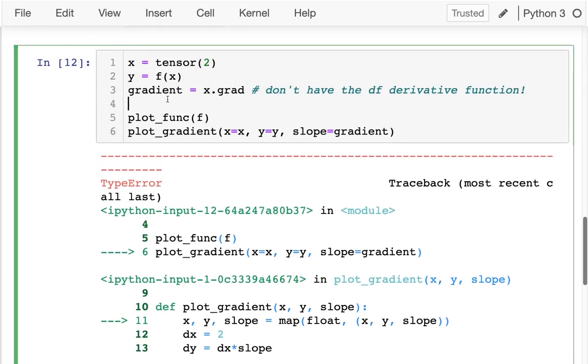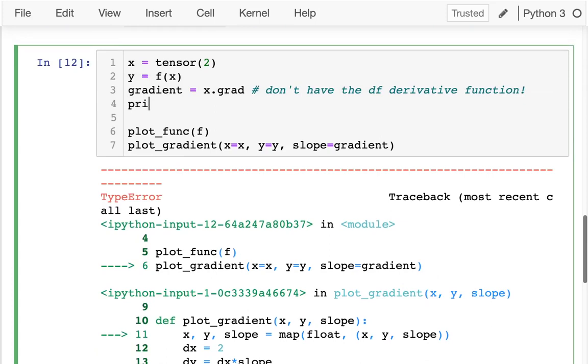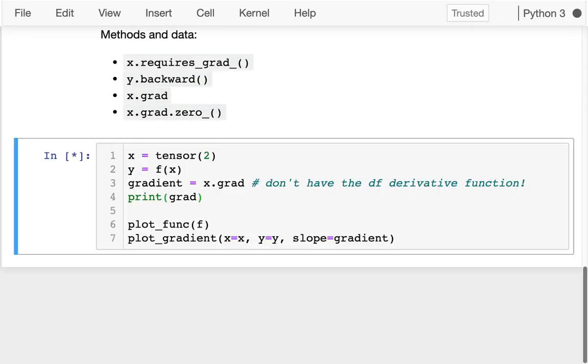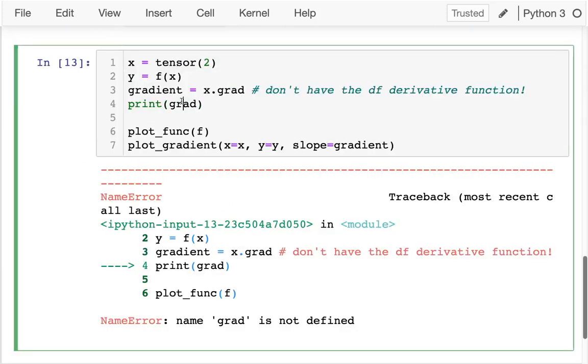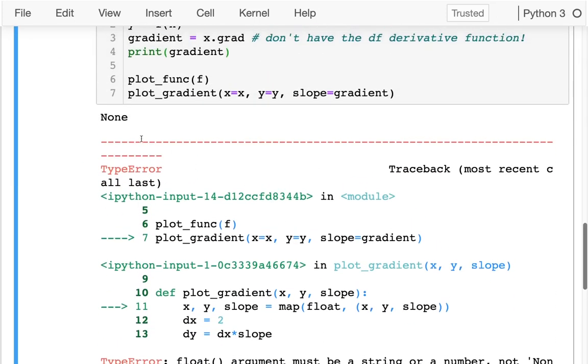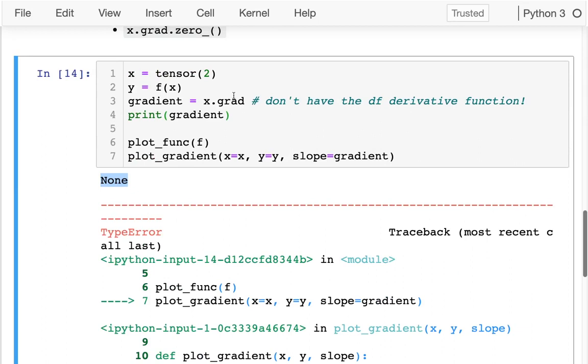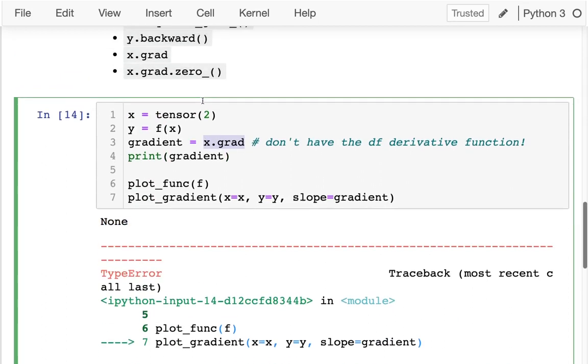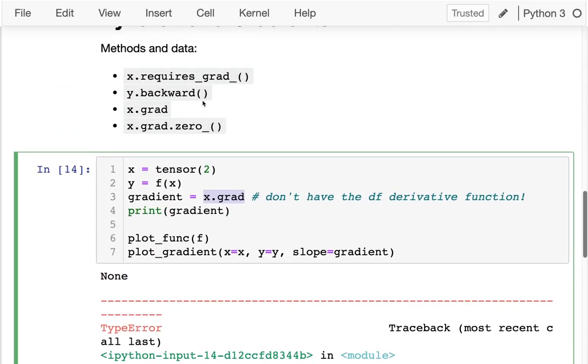And now the problem is that we have none. What is this gradient here? Let me print this off. I have this gradient, okay. Oh, gradient, okay. And look there, it's none. So it should be here, but it's not there yet.